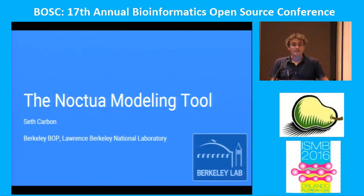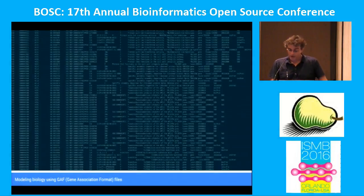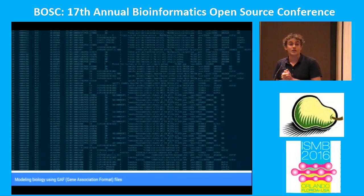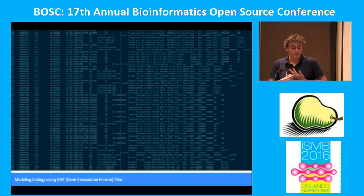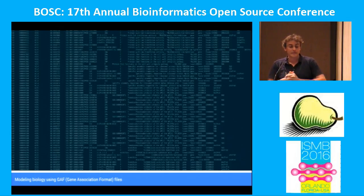I want to start by framing the problem we're trying to solve to give you a bit of context. Our problem is that we have a gene annotation file from the Gene Ontology Consortium. This is, besides the ontology data, the bread and butter data that the Gene Ontology Consortium deals with. Essentially, you have terms, gene products, an evidence code, and who made the annotation and so on — this is the kind of data we collect and deal with on a day-to-day basis.